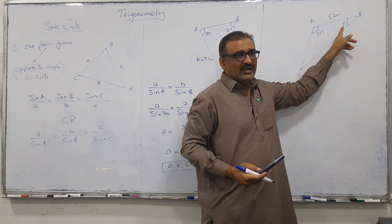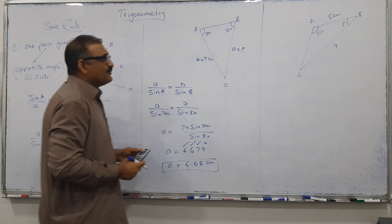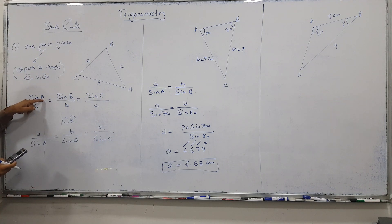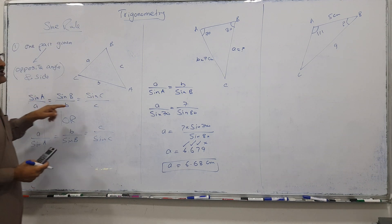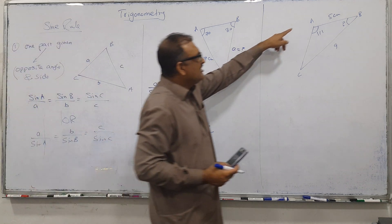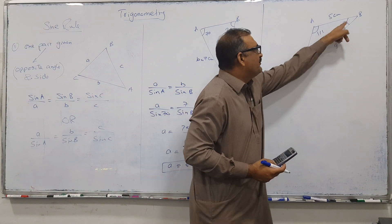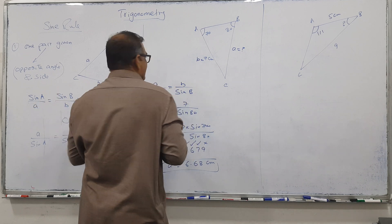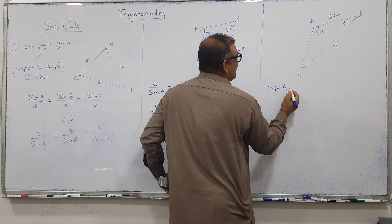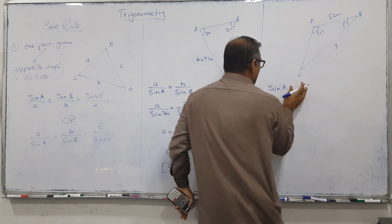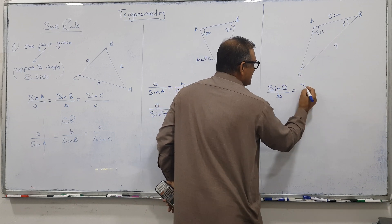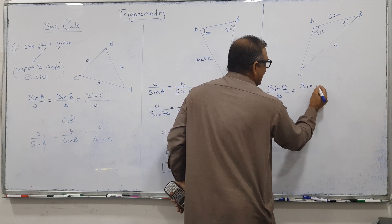Now for the second question, angle B is unknown. Since the angle is unknown, I'll use the upper form — sin B over b. Since a and b are both involved, I'll use sin A over a equals sin B over b. Capital B is the question and I need small b.